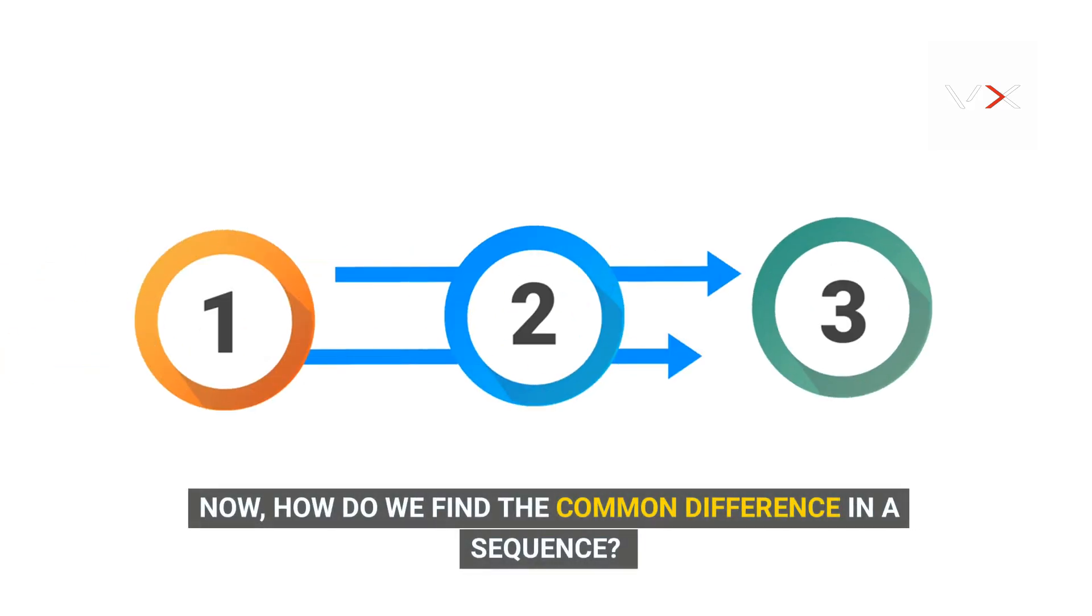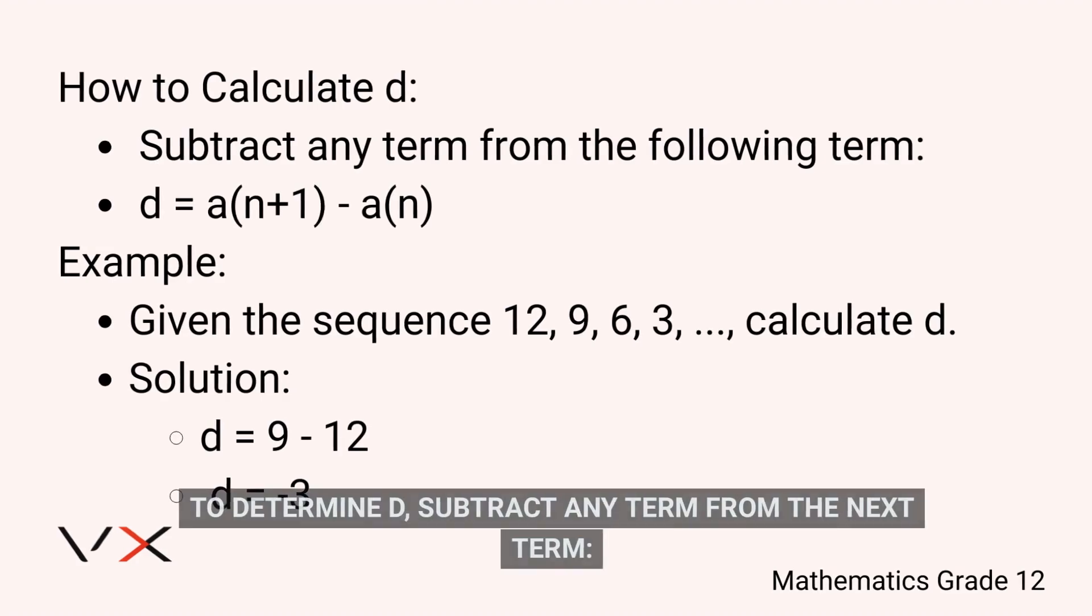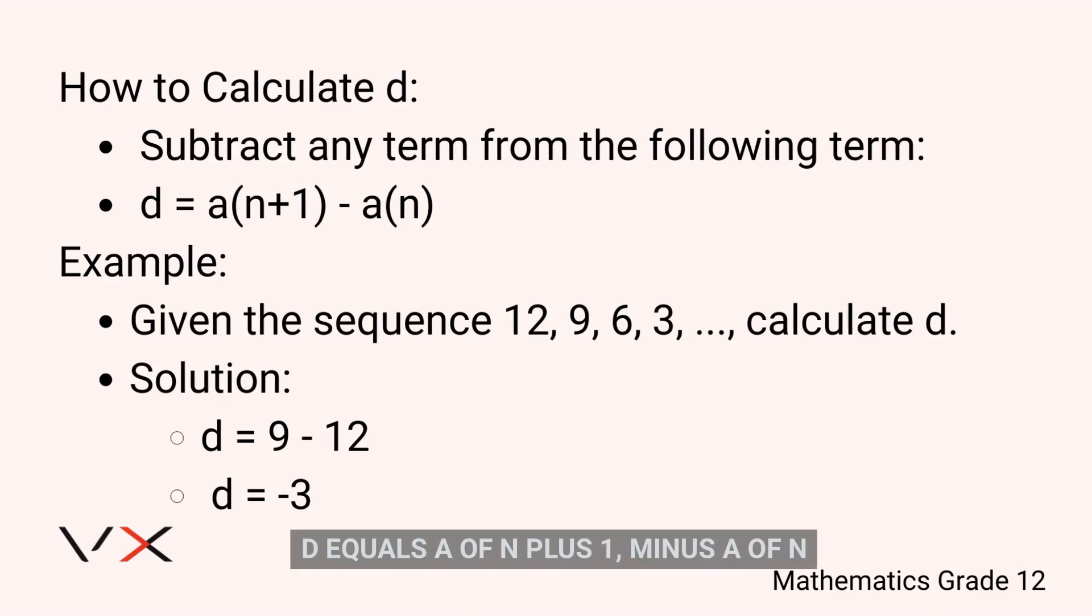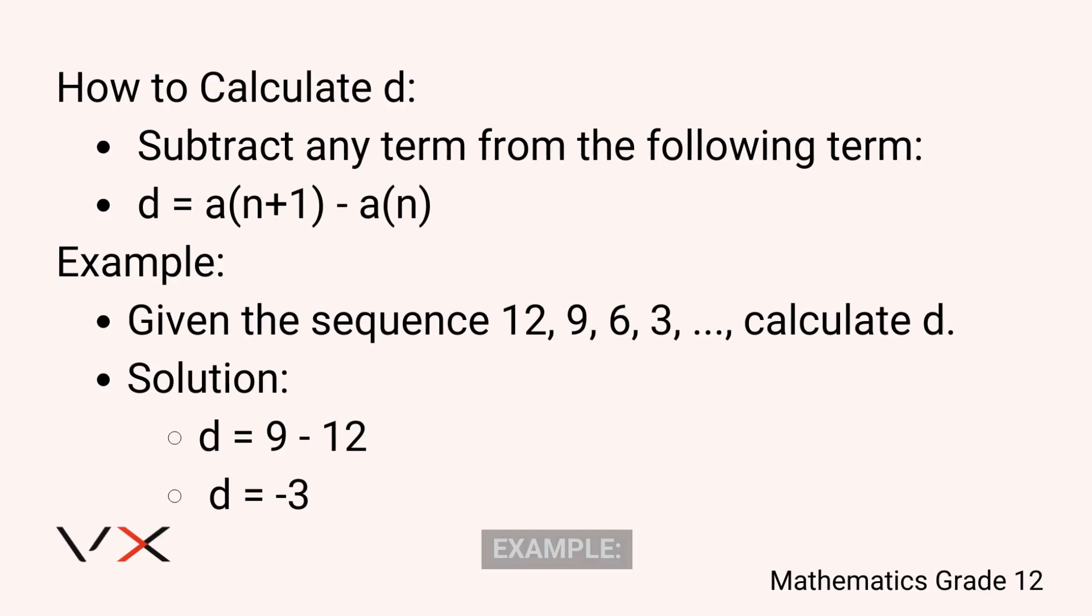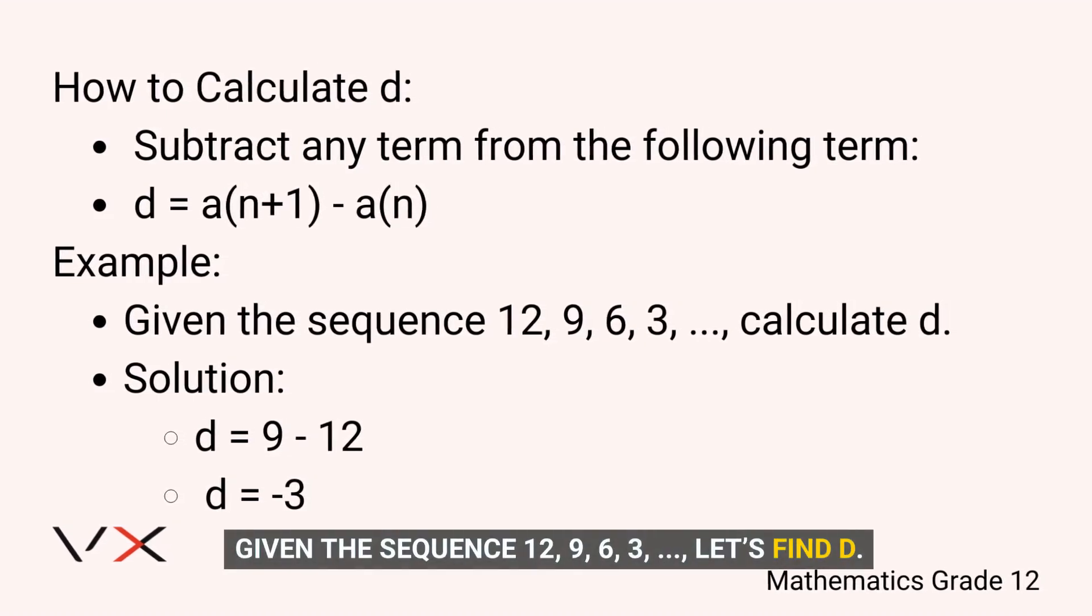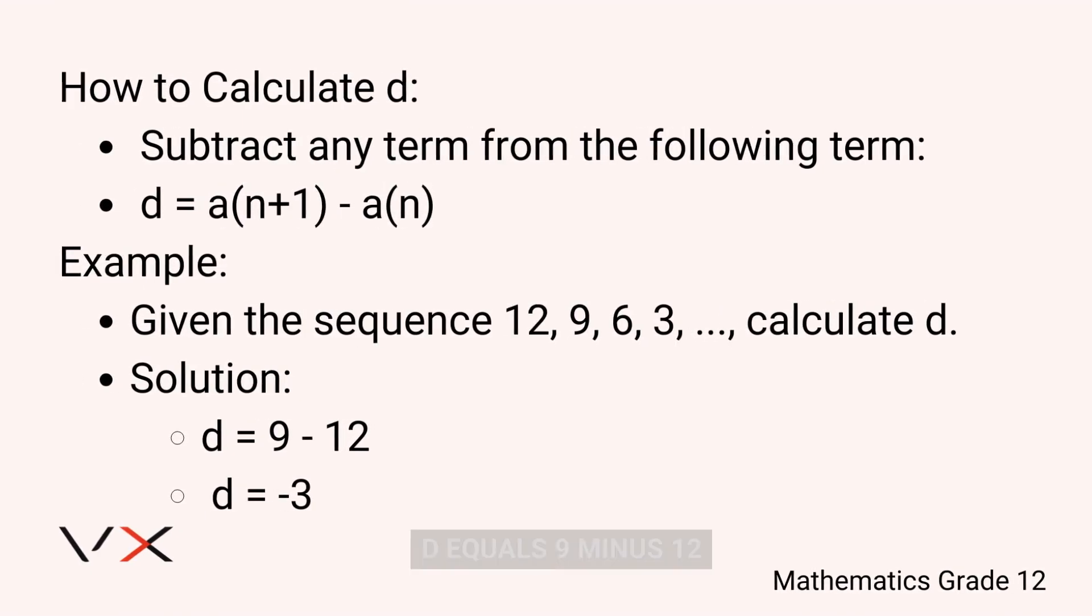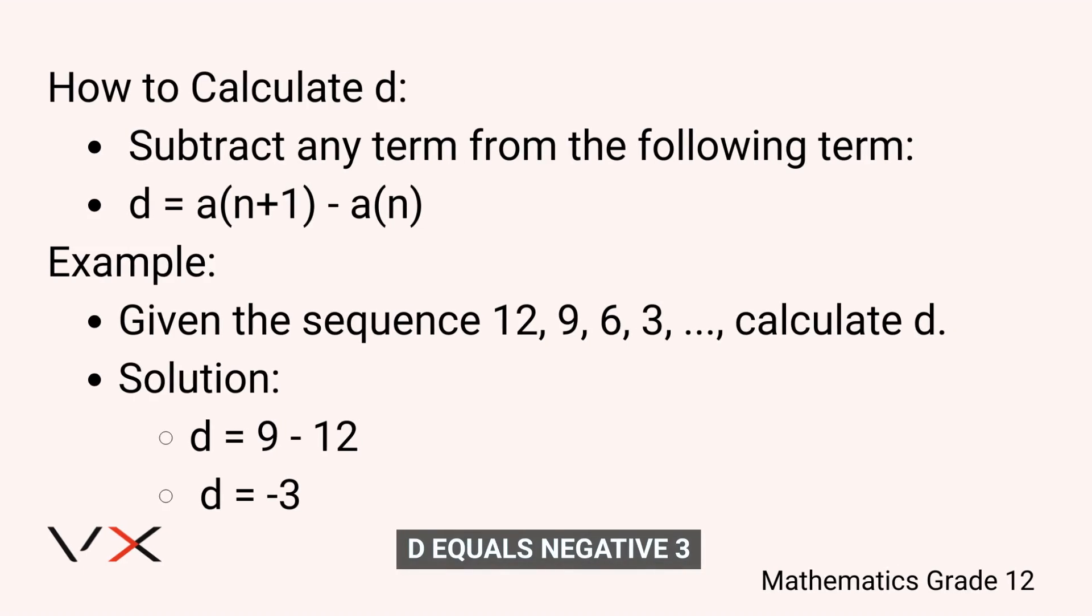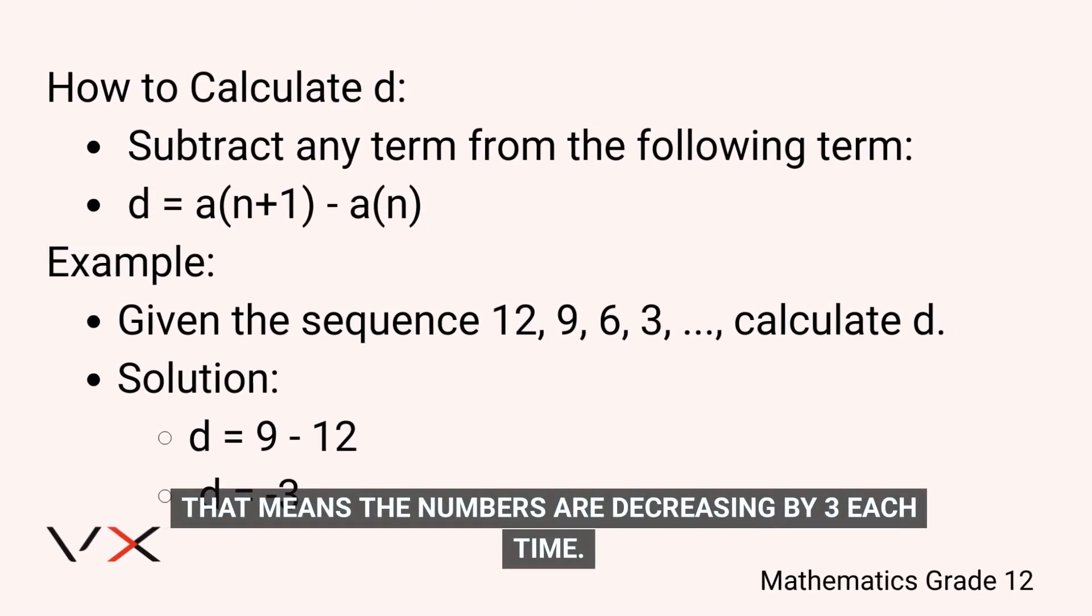Now, how do we find the common difference in a sequence? Let's discuss Topic 3. To determine d, subtract any term from the next term: d = a(n+1) - a(n). Example: Given the sequence 12, 9, 6, 3, let's find d. d = 9 - 12, so d = -3. That means the numbers are decreasing by 3 each time.